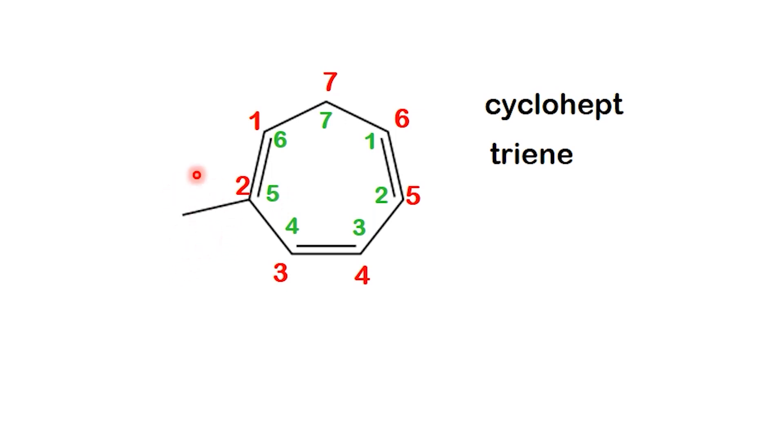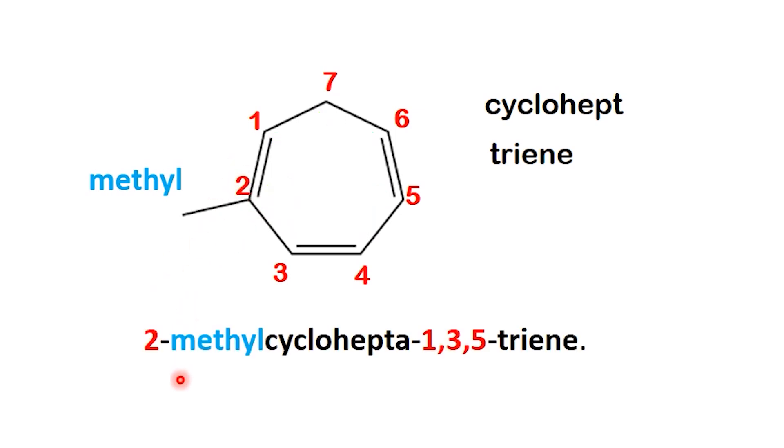The ring has a methyl group attached. In the first direction, the methyl group is on carbon 2. In the other direction, it would be on carbon 5. Since 2 is lower than 5, we choose the first numbering. That gives us the correct name, 2-methyl-cyclohepta-1,3,5-triene.